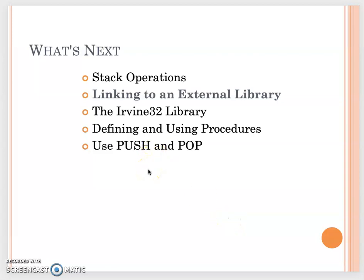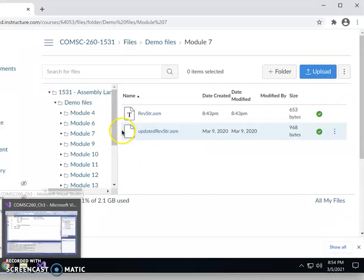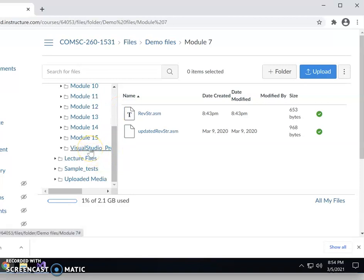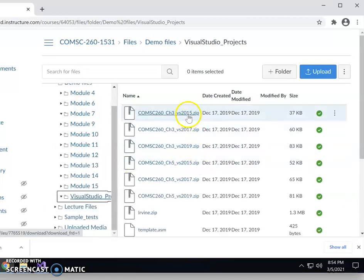From now on through the end of the class, you will be using the CSCI 260 Chapter 5 project. That project will help you link to the Irvine32 library. In this video, the most important thing I want to show you is how to set up your home system to run the Irvine32 library using the CSCI 260 Chapter 5 project.